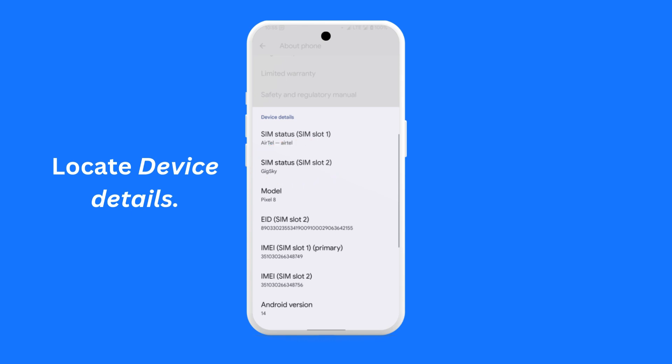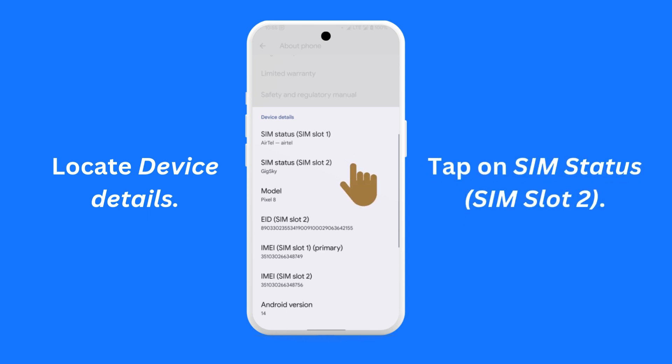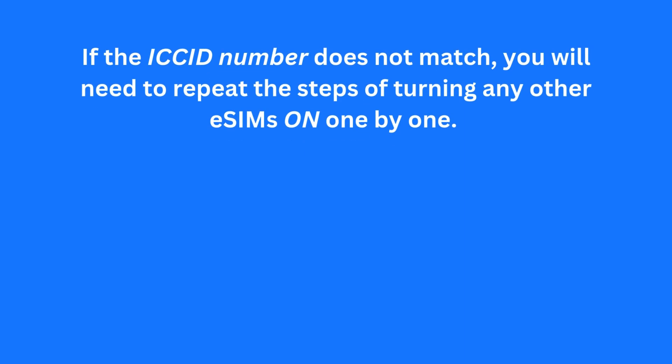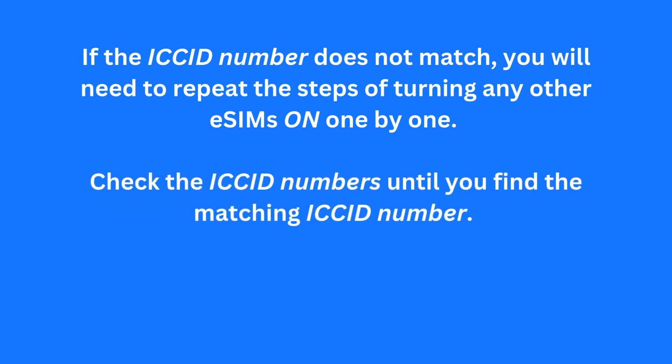Here is an example. Tap on SIM Status, SIM Slot 2. You will be shown a new screen where you can look for the field with the label ICC ID. If the value shown for this field matches what you noted down previously from the GigSky app, then it means the right GigSky eSIM has been selected.